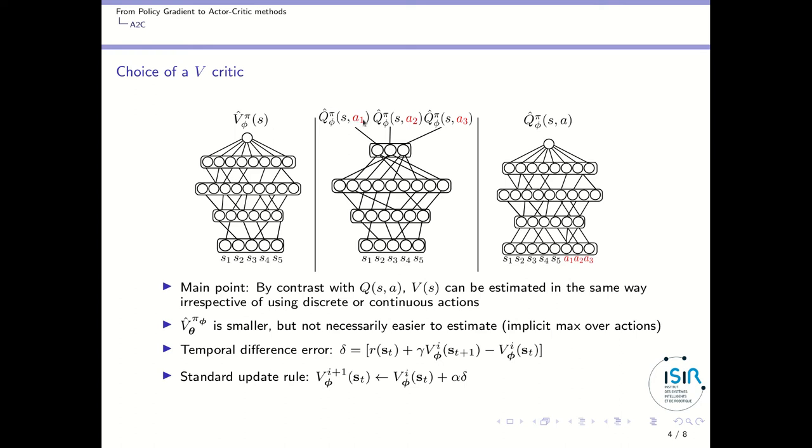To learn this network is very simple. You have to compute a temporal difference error—I call it delta. If you have a value function, you don't need any action here, so it's quite straightforward. Then you apply the standard update rule, where the value at the next iteration is the value at the previous iteration plus alpha (your learning rate) times the delta you just computed. So it's rather easy to implement critic learning in A2C.